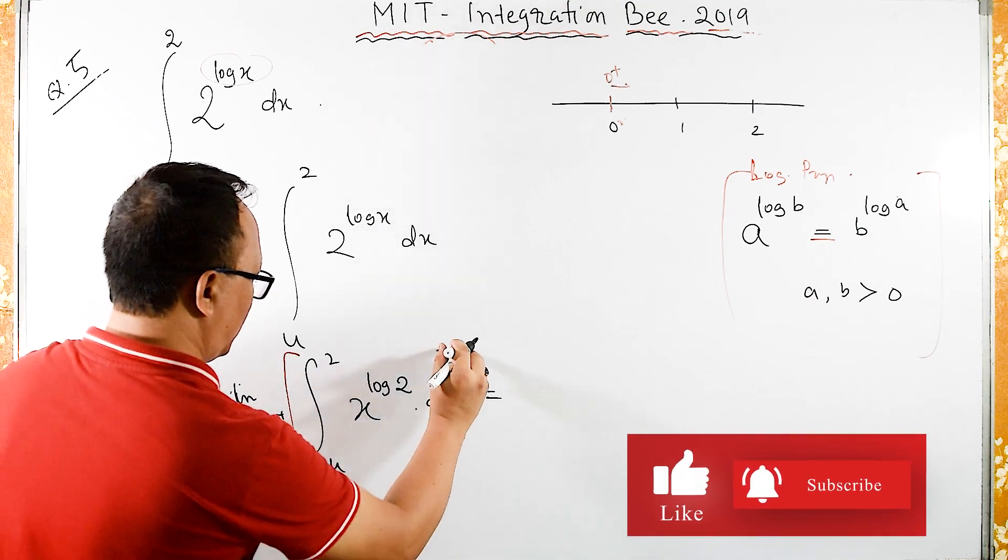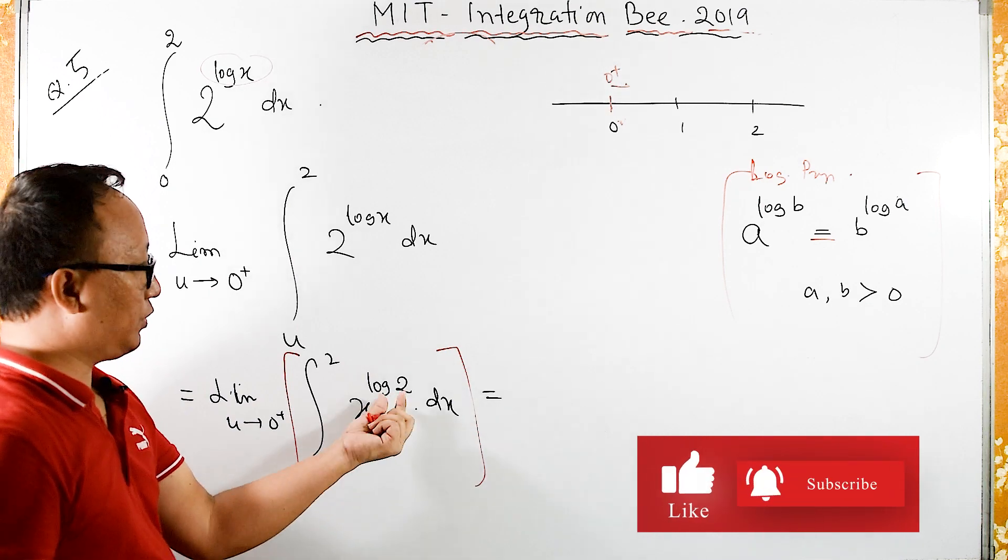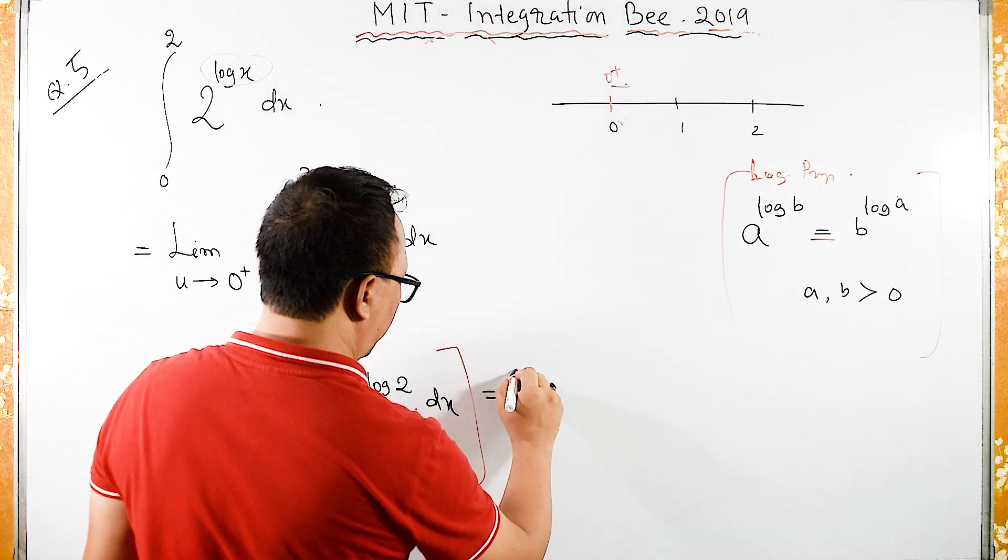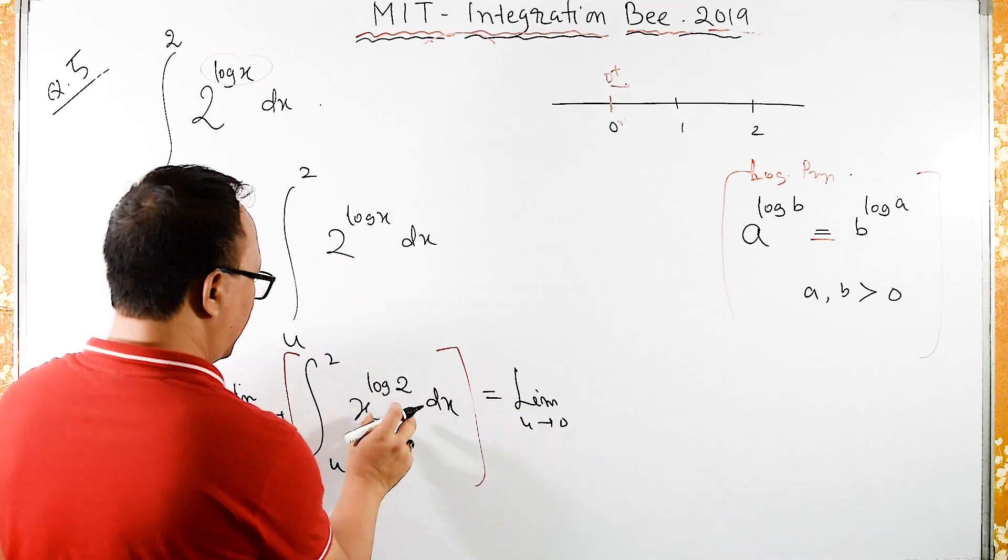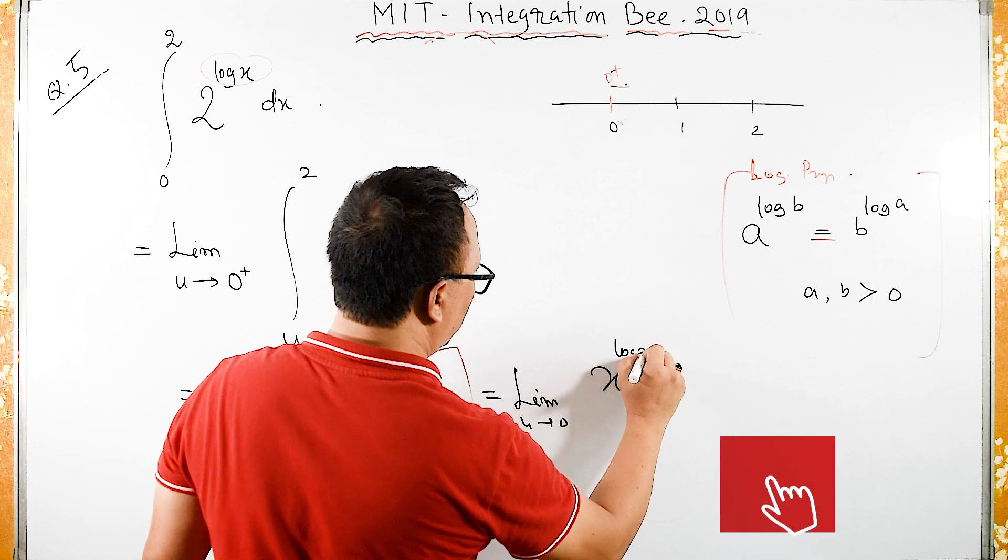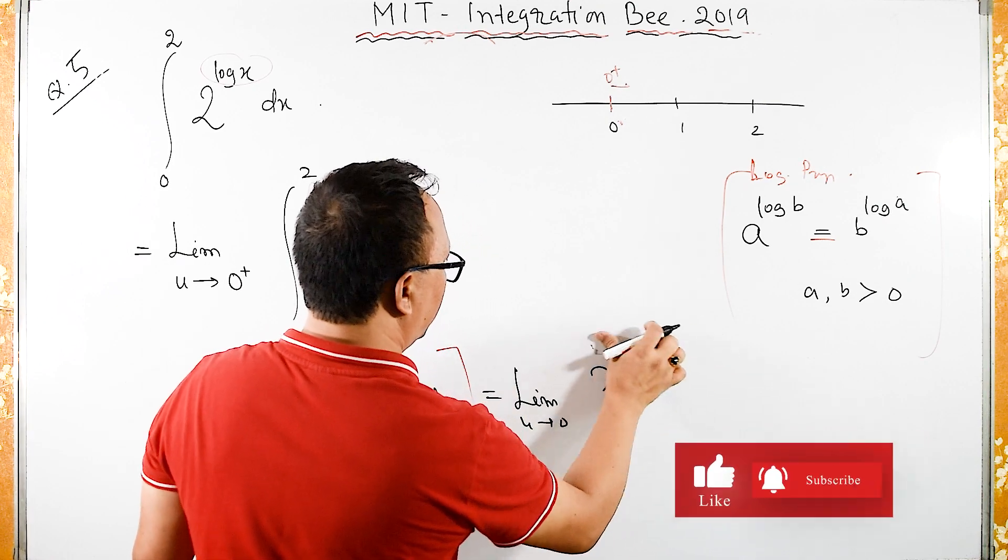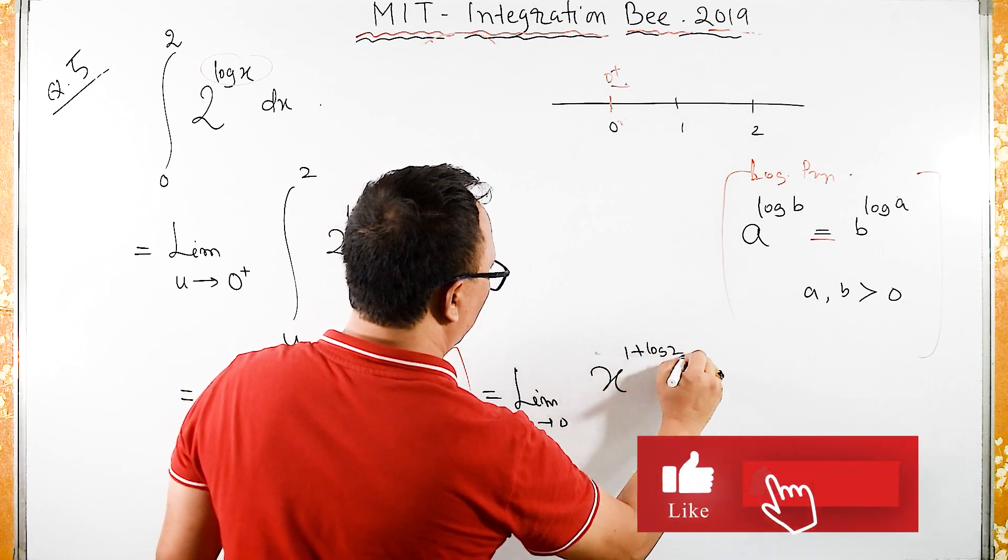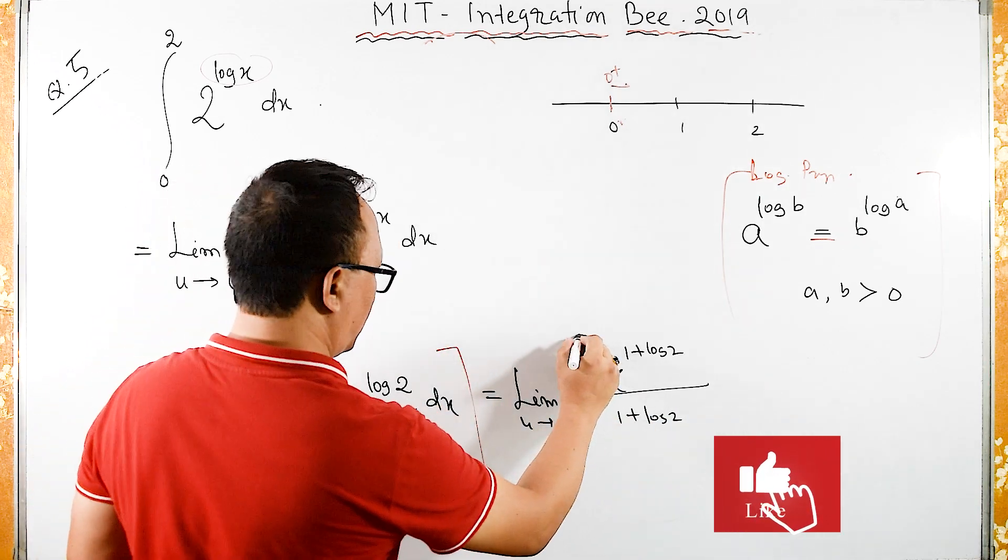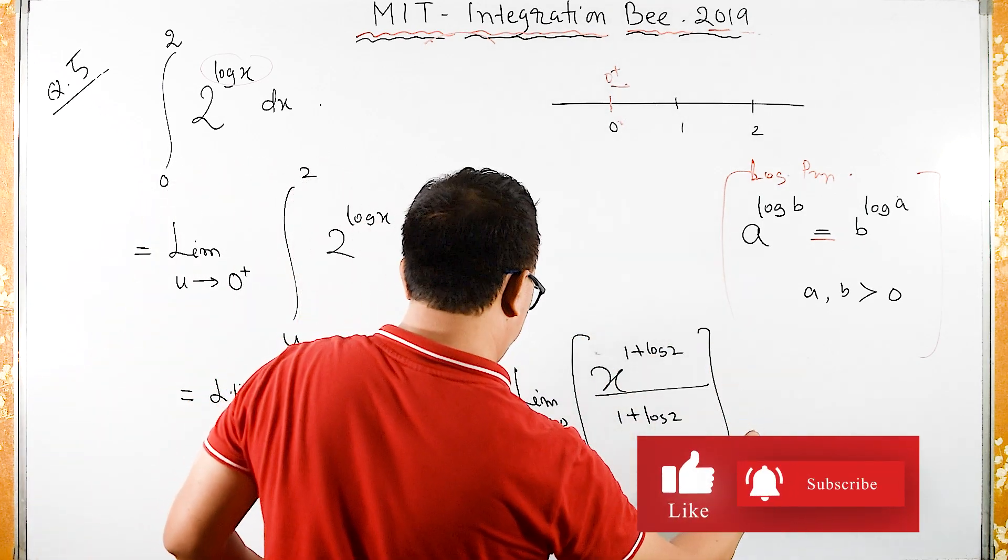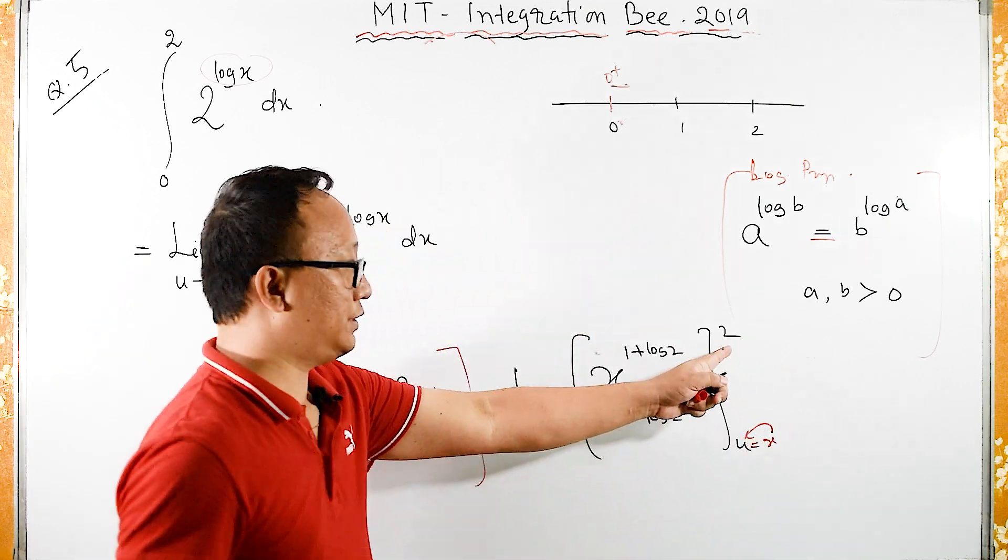Let us integrate this something like x raised to n. Here log 2 is constant, so this is same as limit u tends to 0, integration of this is x raised to 1 plus log 2 upon 1 plus log 2, and then limit is u to 2.